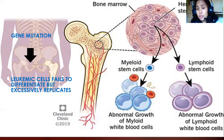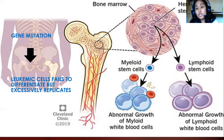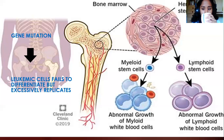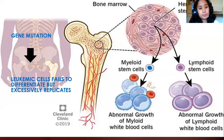Acute myeloid leukemia mostly affects your myeloid stem cells, which mature into red blood cells, granulocytes (neutrophils, eosinophils, basophils), platelets, megakaryocytes, and monocytes — all part of the myeloid line. So far, there are no documented cases of a person having both AML and ALL simultaneously — they are different diseases.